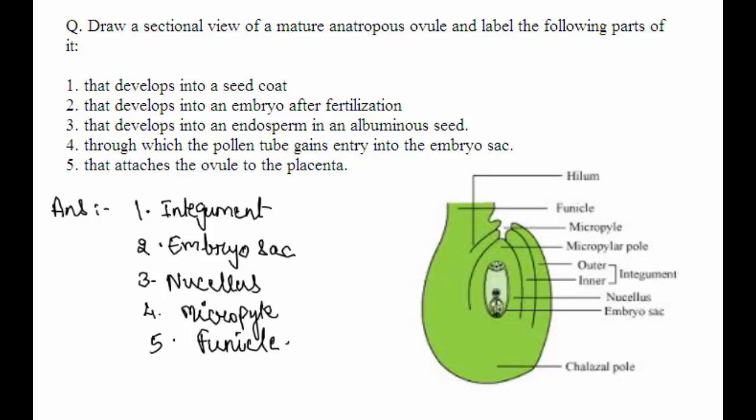The micropyle is the opening through which the pollen tube gains entry into the embryo sac. So this is the opening, and through this opening the pollen tube enters into the embryo sac. That is called the micropyle.